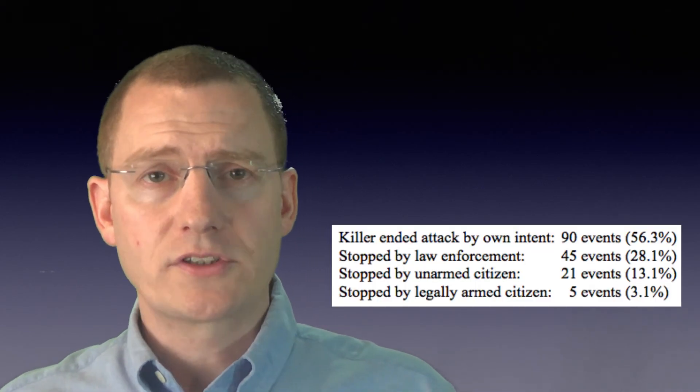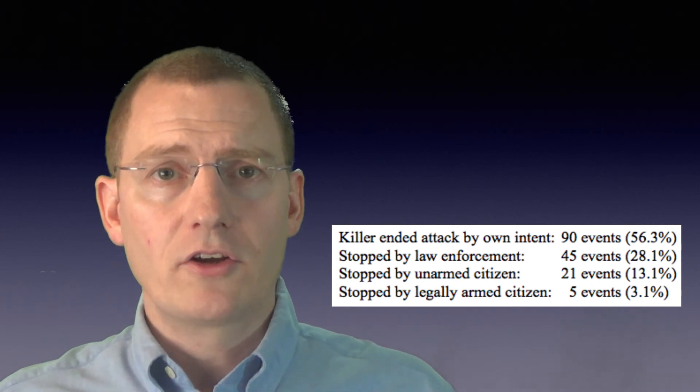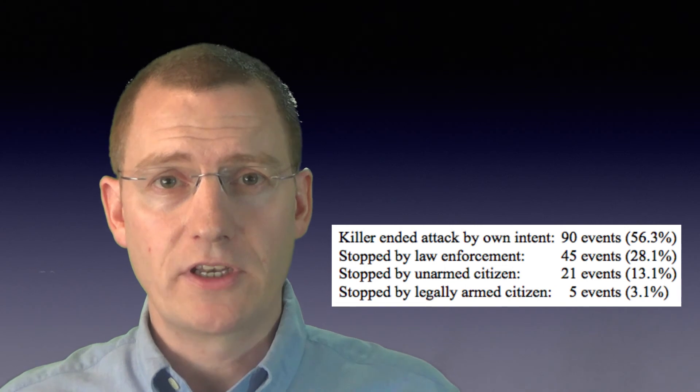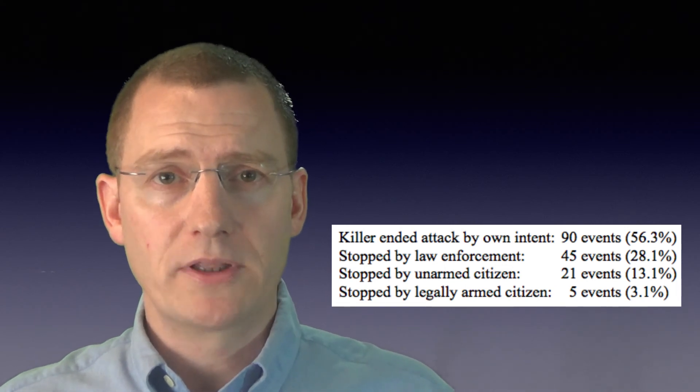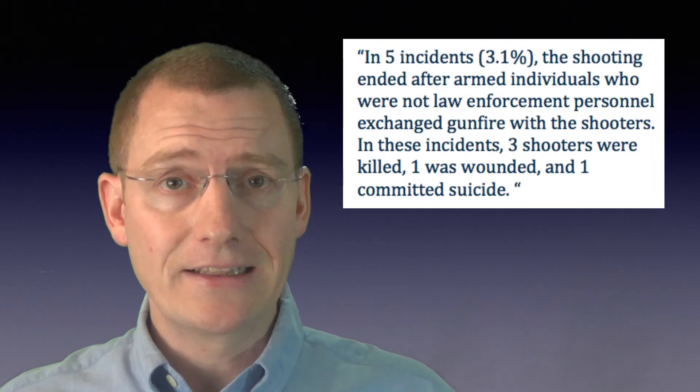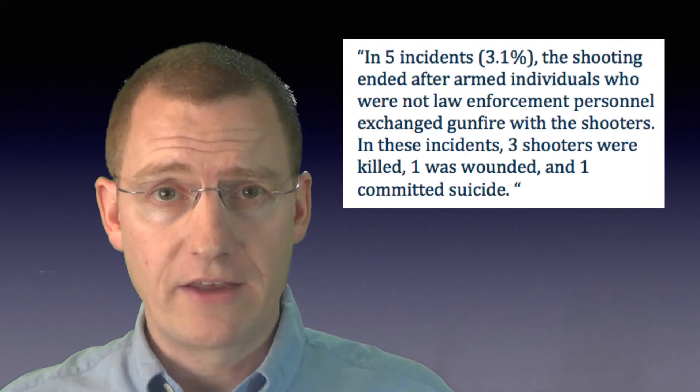It's worth noting that citizens stopped a number of these events. In 90 of the 160 events, the killer stopped the attack of his own volition. Of the other 70, 45 were stopped by police, unarmed civilians stopped 21, and legally armed civilians stopped 5. Now that may seem like a small number, but it's incredibly significant when you consider that the vast majority of these attacks occur in gun-free zones.